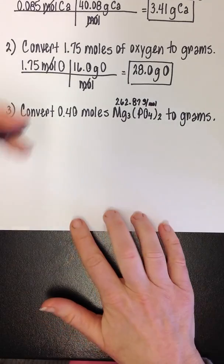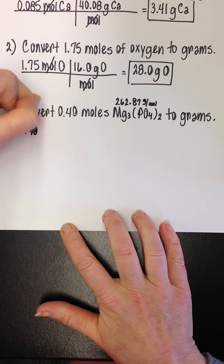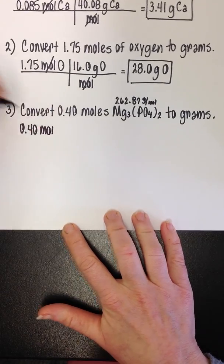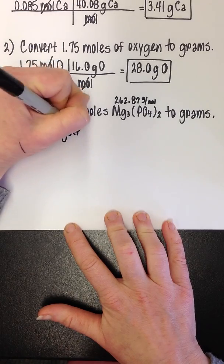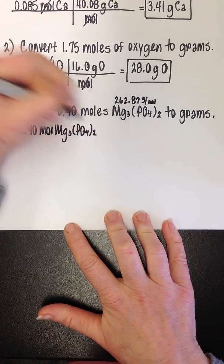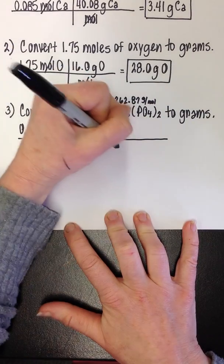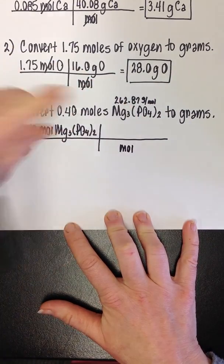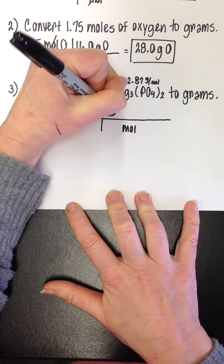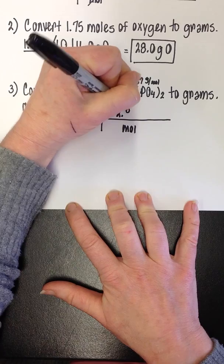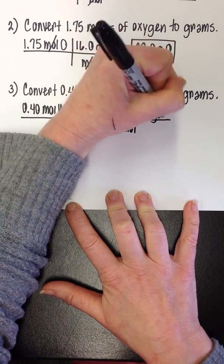Now let's just go back and start the problem. We're going to write down the given 0.40 moles of Mg3, yes you have to write all that out, PO42. Draw our long line and our short line. One mole of magnesium phosphate we just found has a mass of 262.87 grams. I'm going to label what that is right here because I need to keep up with it.